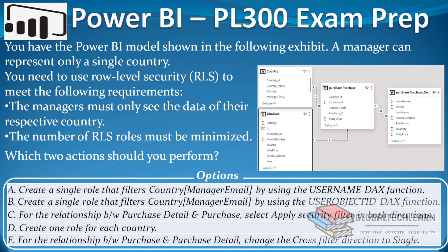The question is: you have the Power BI model shown in the following exhibit. A manager can represent only a single country. You need to use row level security to meet the following requirements: the manager must only see the data for their respective country, and the number of row level security roles must be minimized. Which two actions should you perform? On the right side we can see four tables in the model: country, date, purchase, and purchase details.